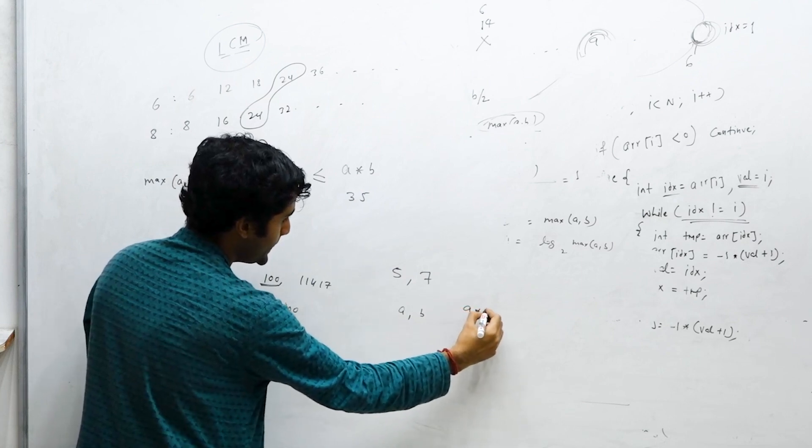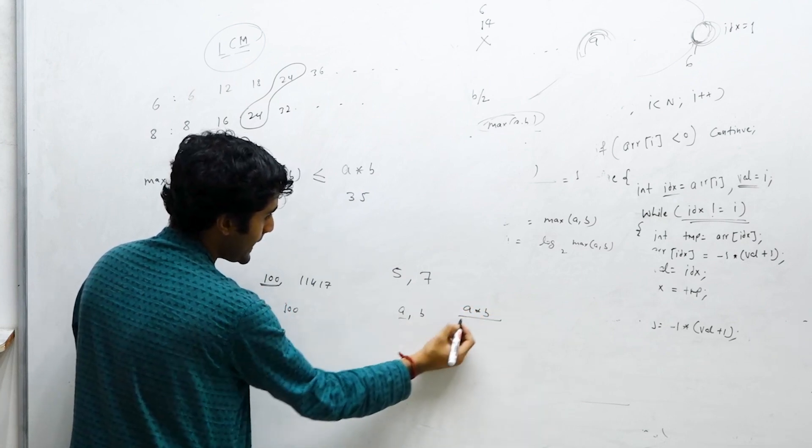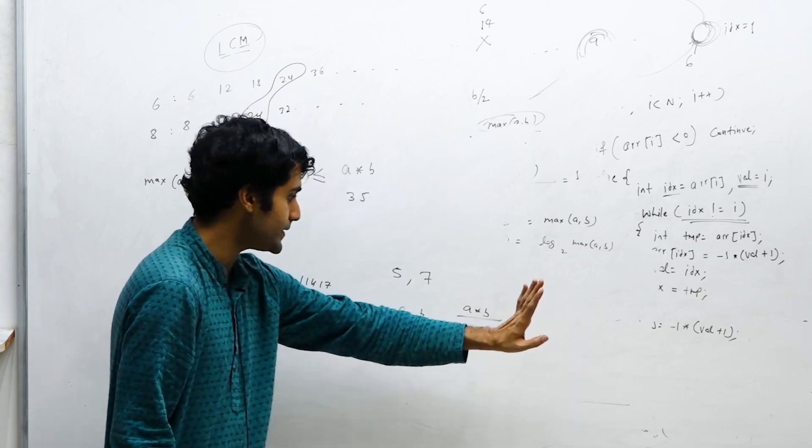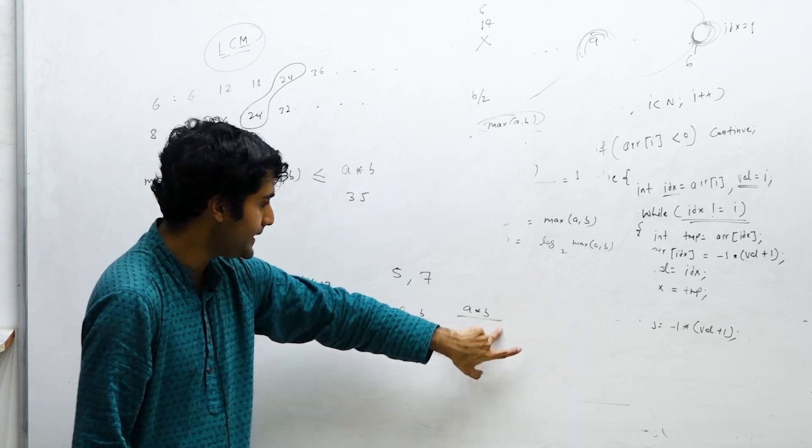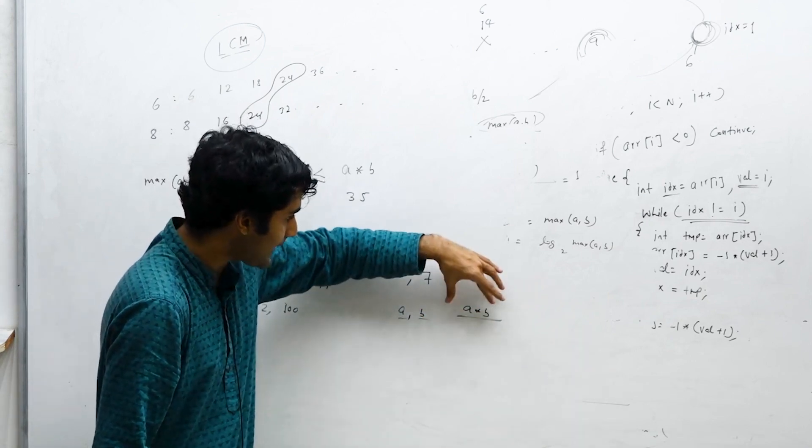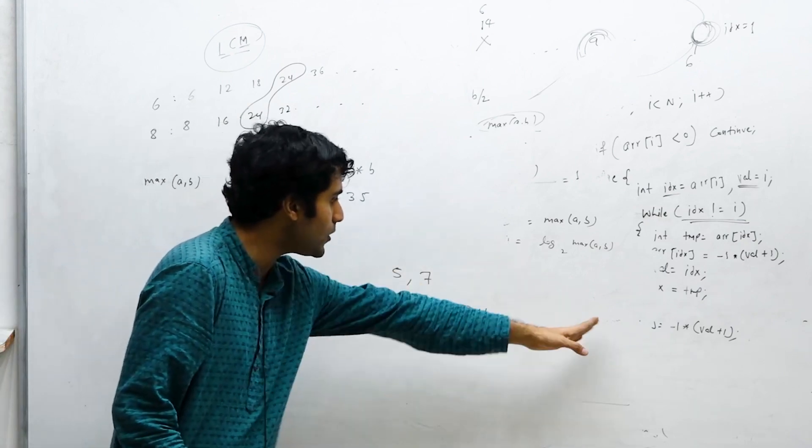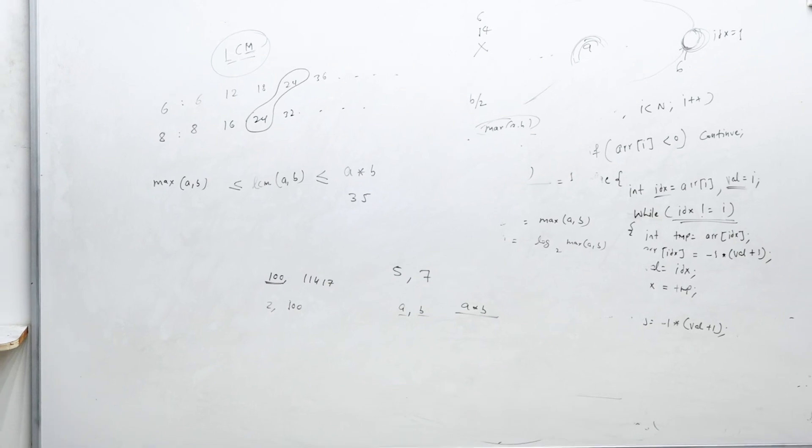In the worst case, let's say you have something like 5 and 7, the LCM is 35. Because if you have two numbers a comma b, then a into b is divisible by a and by b. Anything greater than this, no need to consider that. This will for sure be a common multiple.